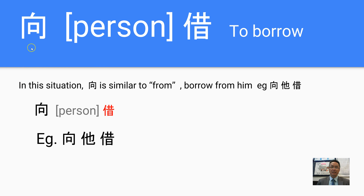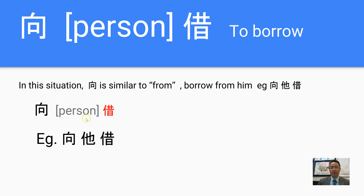This character is pronounced 'xiang.' When we use 'xiang' it means towards or to someone. Our previous video lesson was on 'may I borrow something from you.' Here it's saying borrow something from him. So 'xiang' — that person — borrow.